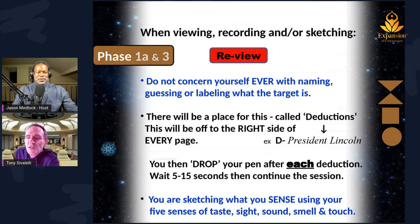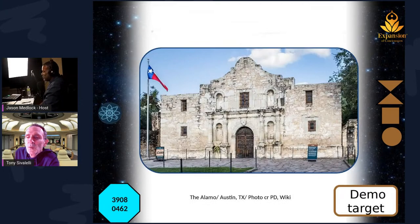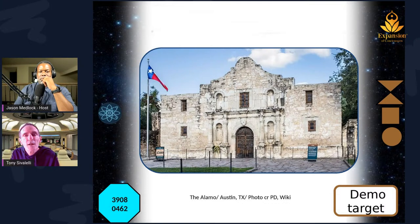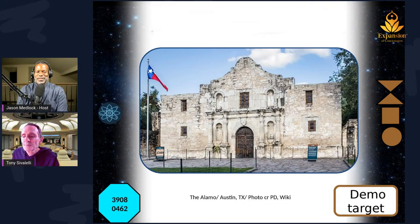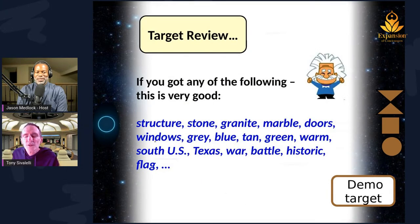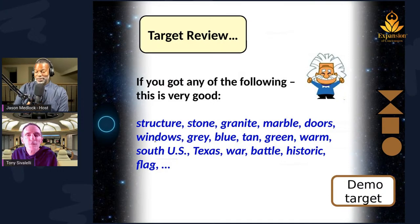Next is an actual demo. We would have gone through phases 1A and phase 3. At the end, you're each going to get targets with an actual picture and the actual target coordinates. That was just a demo target I demonstrated through phase 1. We did the ideogram, the ideogram label, the A description, called the ideogram for primitive and advanced descriptors, then went into phase 3 and started sketching. Anything you would have gotten — structure, stone, granite, marble, doors, windows, colors gray or blue or tan, warm, Texas, war, battle, historic — any of those would have been good indicators.